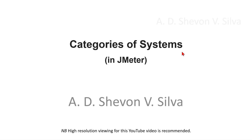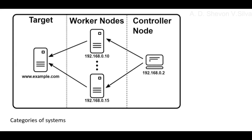Categories of systems in JMeter. Here you can see categories of systems: the controller node, the system running JMeter GUI which controls the test; and the worker node, the system running JMeter server which takes commands from the GUI and sends requests to the target systems.